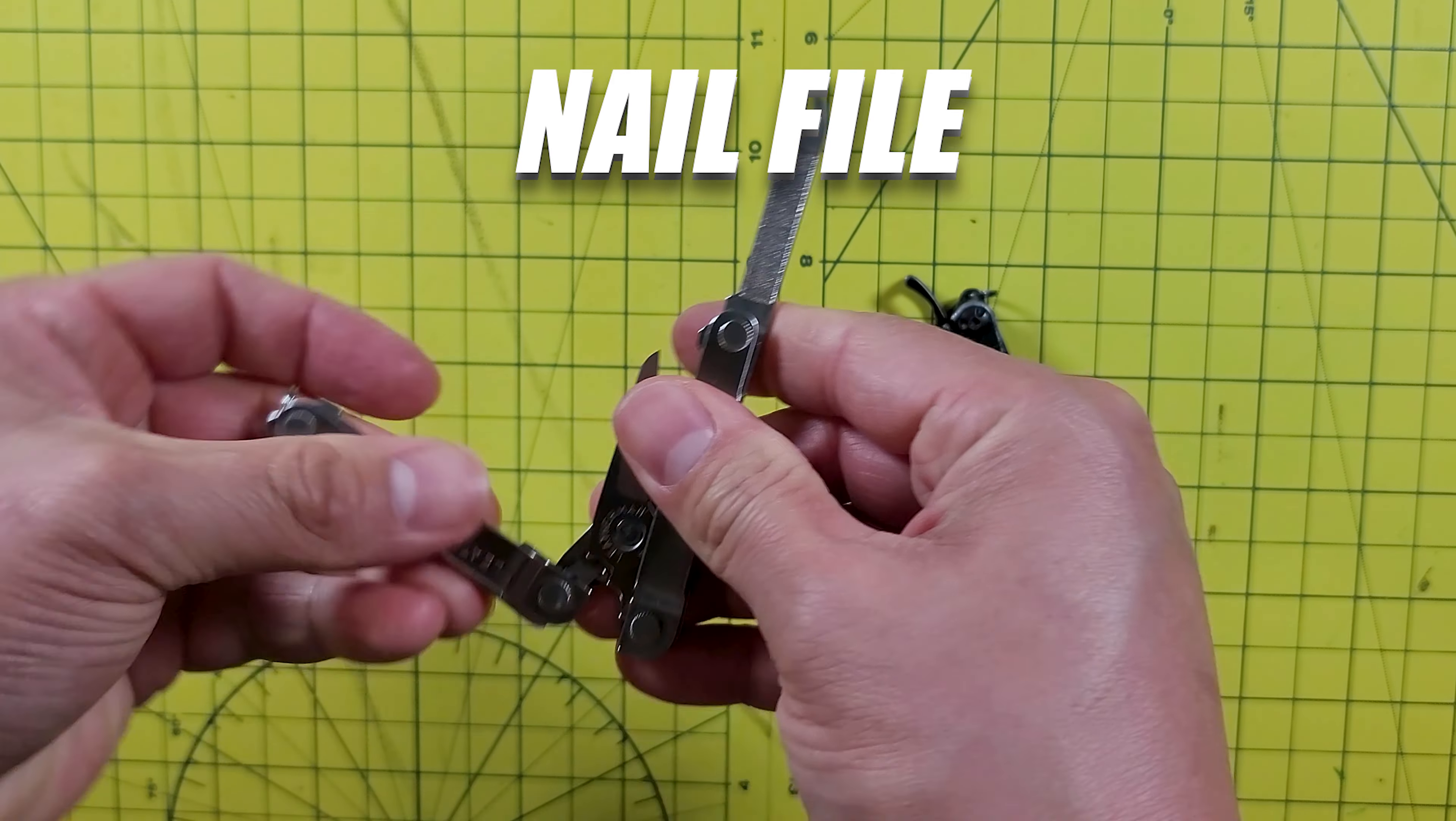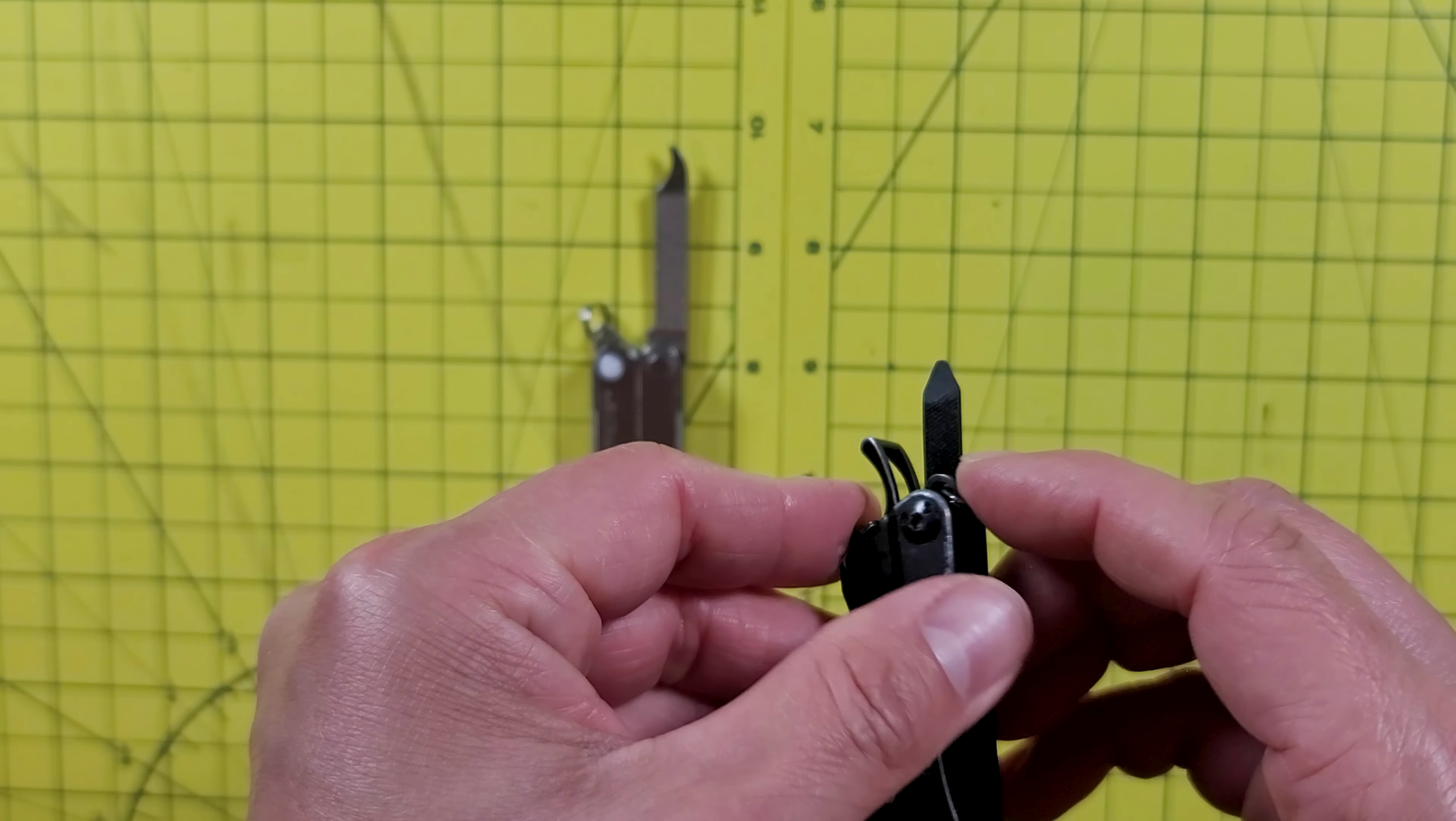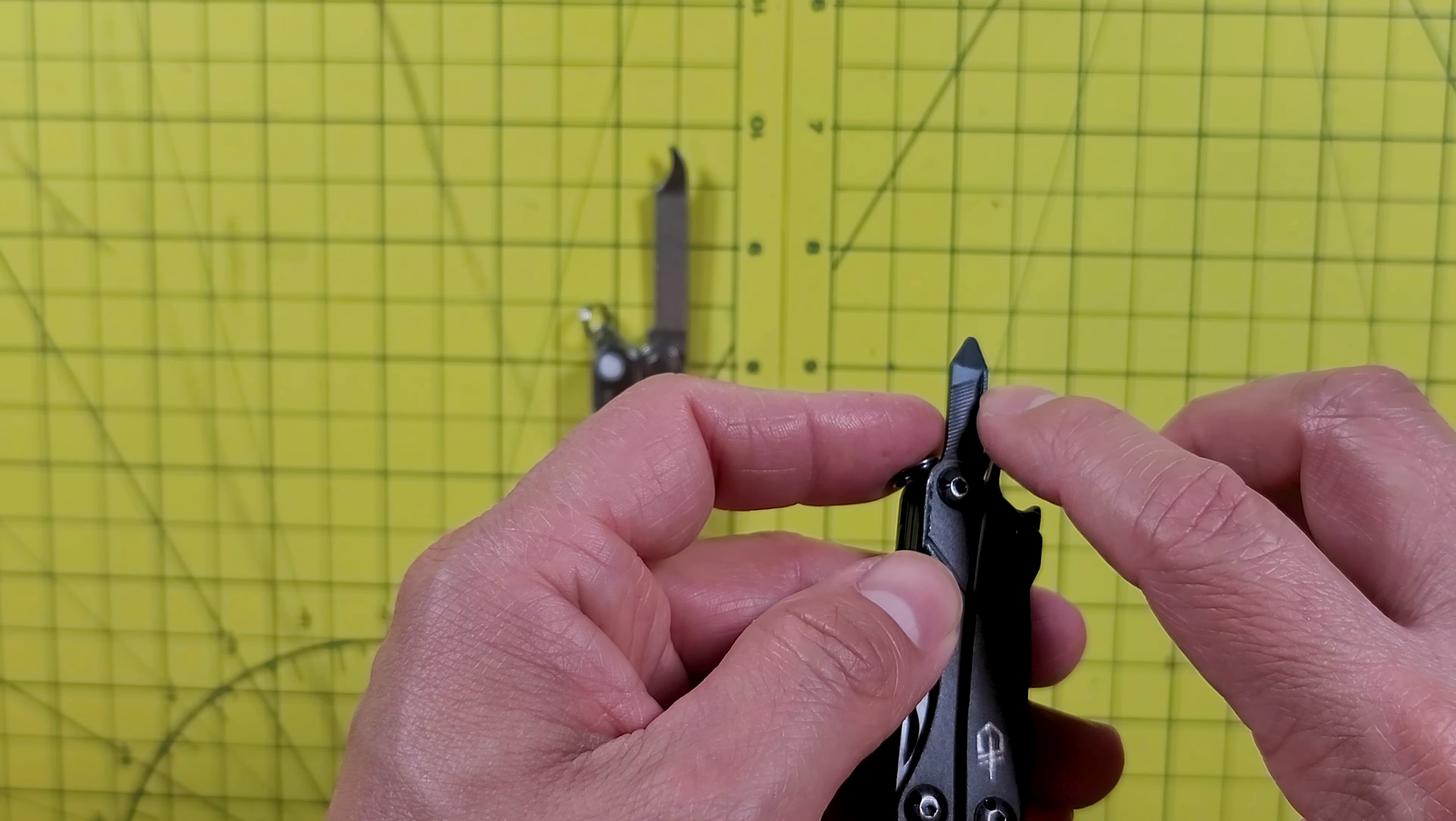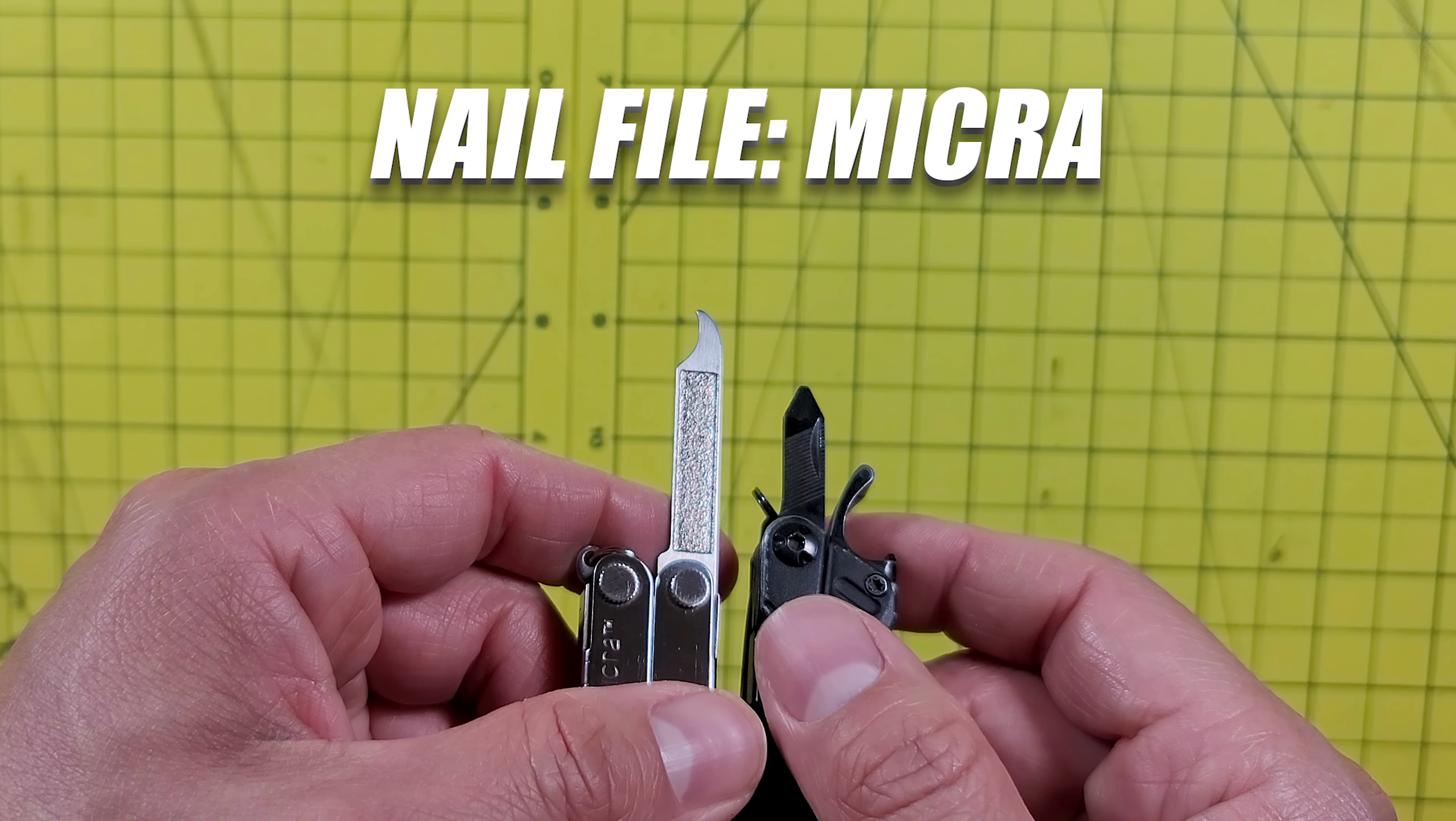Next you have the nail file. The Dime has two files, but they're both too small in my opinion. I would have preferred even if it was just one file, but for it to be just as long as the one on the Micro. I feel a longer file is much more useful than two small ones. So the Micro takes the win when it comes to the files.